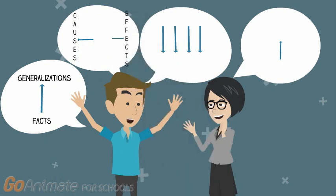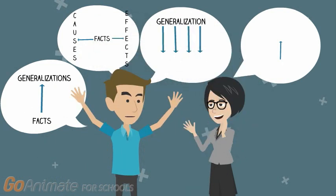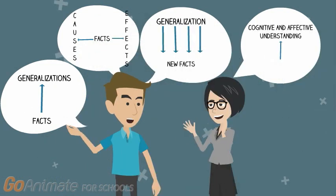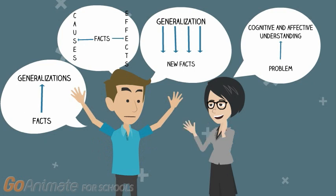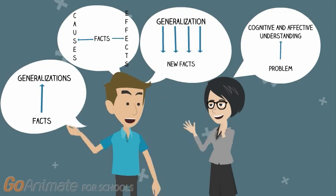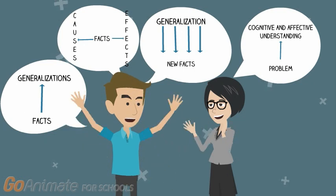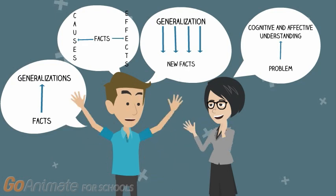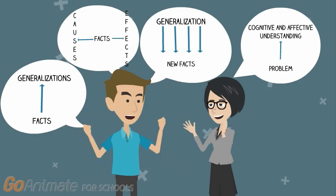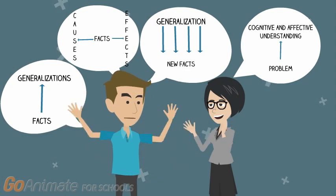According to Taba, dynamic interactions, sequenced questions, and significant content will develop higher order thinking. Four teaching strategies are introduced; these strategies are used to develop concepts. Critical thinking is an ingredient to citizenship.